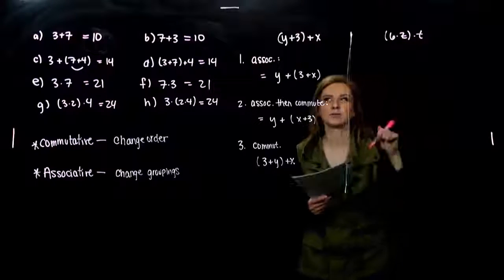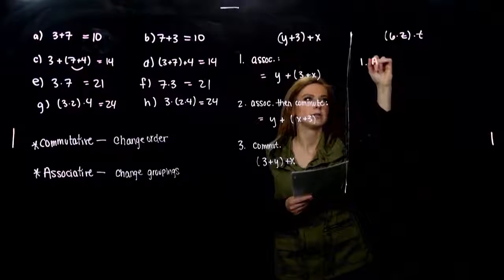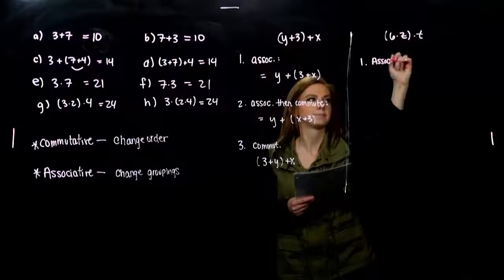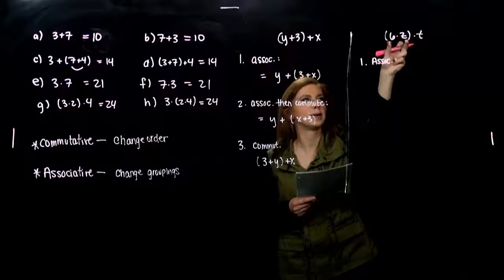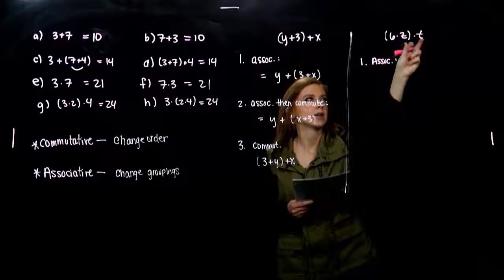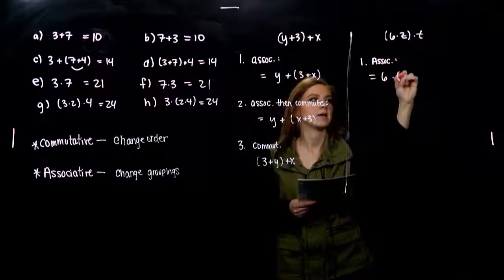Same story for multiplication. So let's look. If I want to use the associative law, what can I do? Instead of grouping six and z together, I can group z and t. It means the same thing.